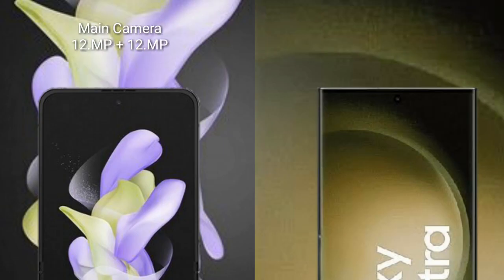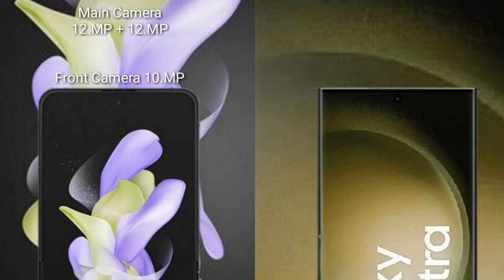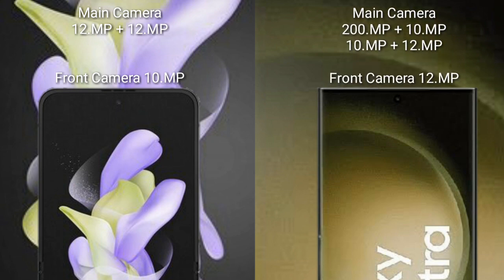The Samsung Galaxy Z Flip 5 has a dual rear camera setup with 12MP and 12MP sensors, and a 10MP front camera. The Samsung Galaxy S23 Ultra has a quad rear camera setup with 200MP, 10MP, 10MP, and 12MP sensors, and a 12MP front camera.